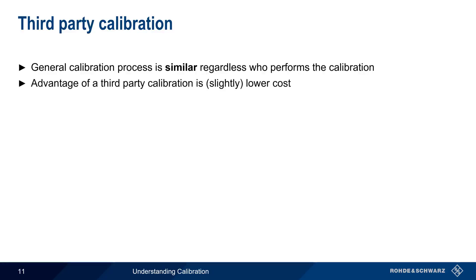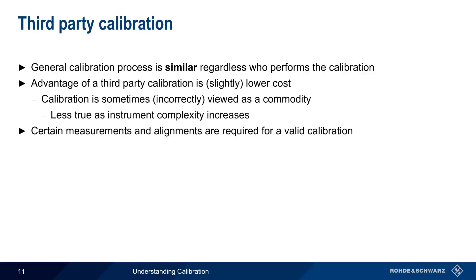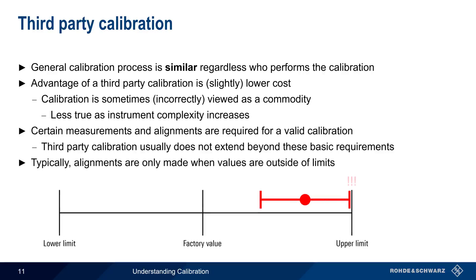We'll start by looking at third-party calibration. Because the general calibration process is similar regardless of who performs a calibration, third parties are sometimes able to offer calibration services for test and measurement instruments. The advantage of having calibration performed by a third party is slightly lower cost. Calibration is sometimes viewed as a commodity — that is, that all calibration is essentially the same — but this is not entirely correct, and is especially true in the case of modern or more complex instruments. While third-party providers can perform the basic measurements and alignments needed for a valid calibration, these providers typically perform only these measurements and alignments, and alignments are normally only performed when values are outside of the acceptable limits, regardless of how close values may be to those limits. This is especially problematic if the instruments used by a third-party provider have relatively large measurement uncertainties.